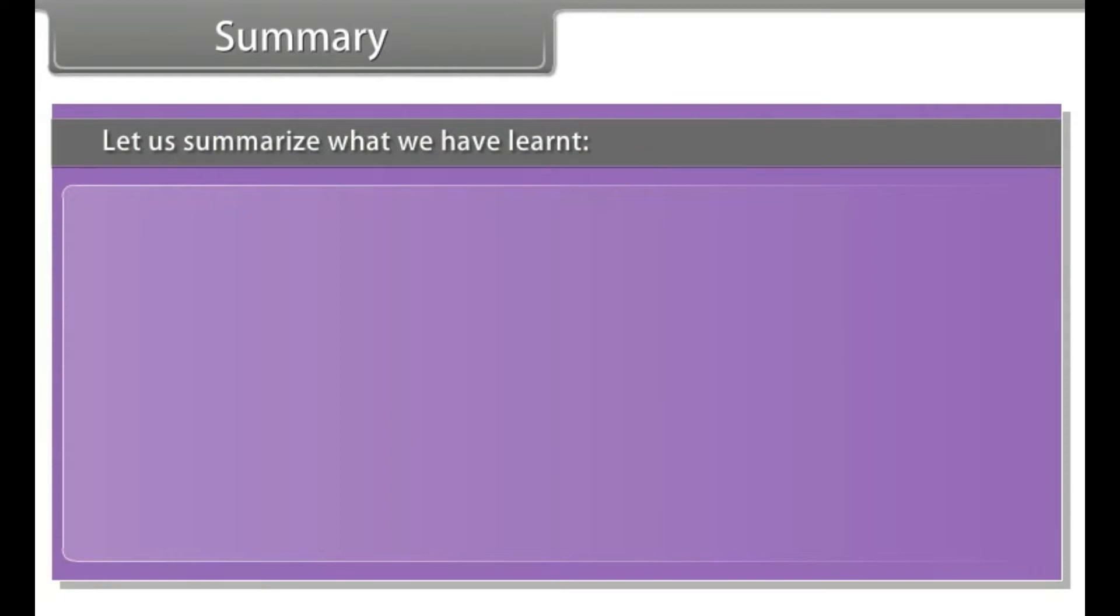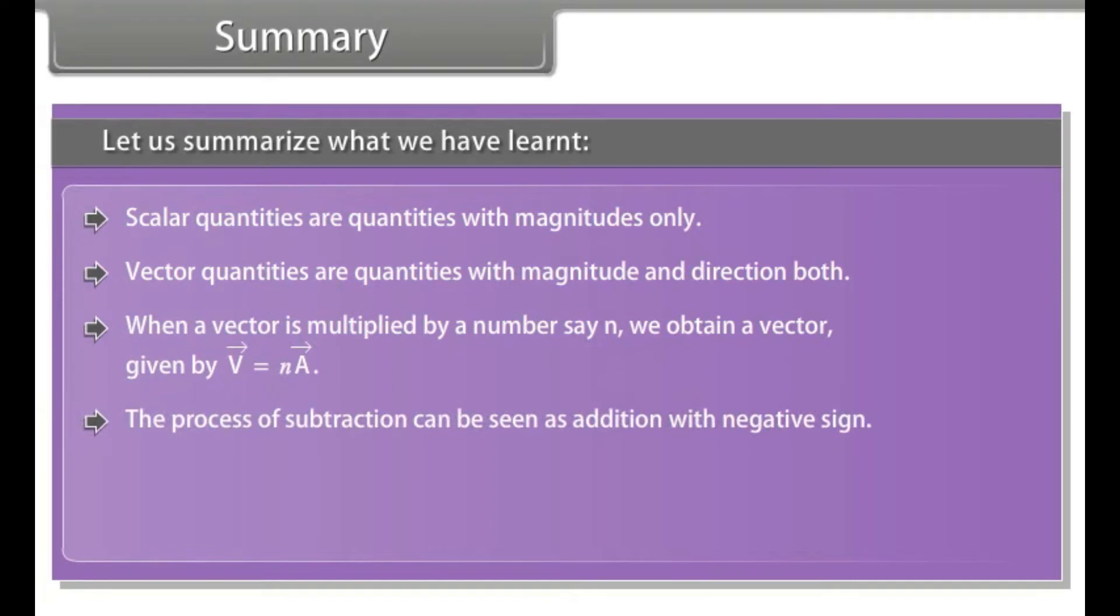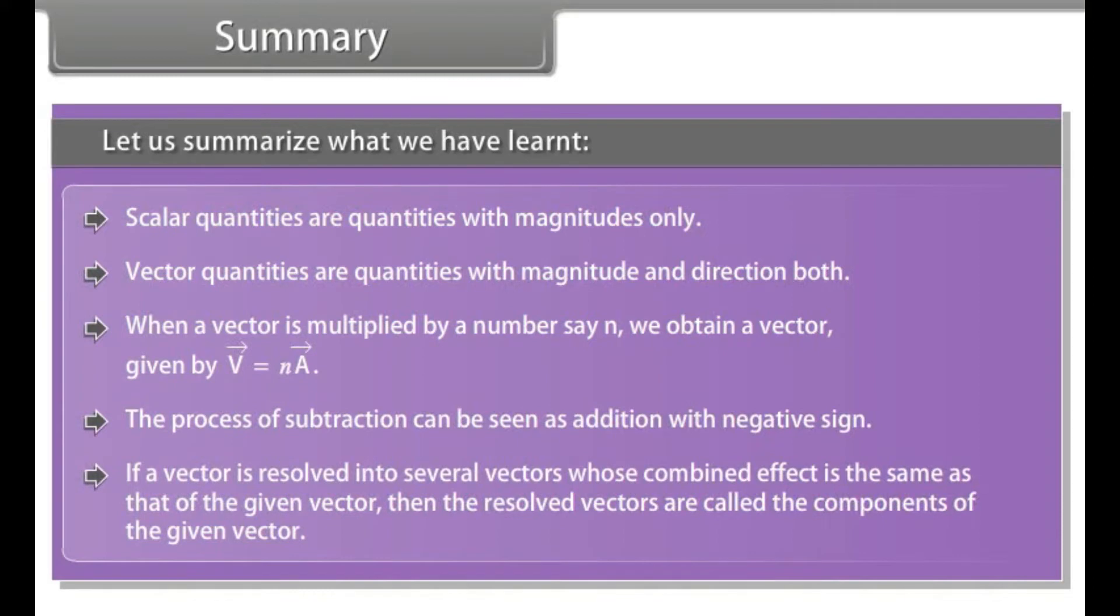Summary. Let us summarize what we have learnt. Scalar quantities are quantities with magnitudes only. Vector quantities are quantities with magnitude and direction both. When a vector a is multiplied by a number say n, we obtain a vector v given by v = n × a. The process of subtraction can be seen as addition with negative sign. If a vector is resolved into several vectors whose combined effect is same as that of the given vector, then the resolved vectors are called the components of the given vector.